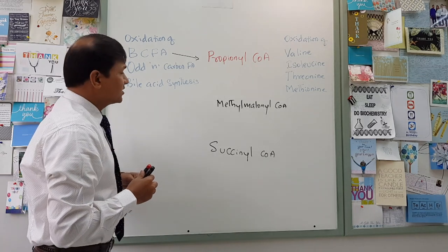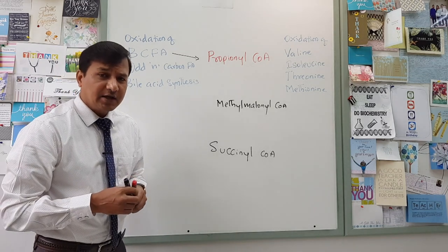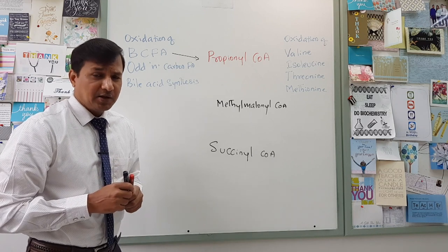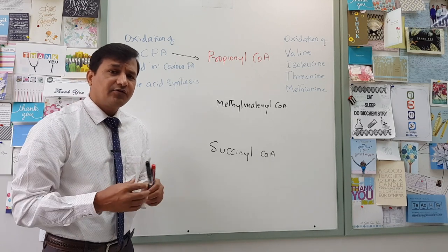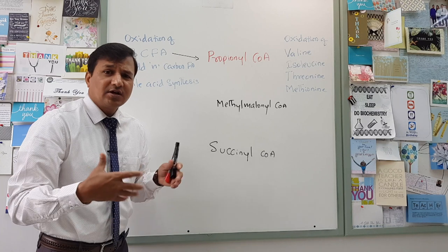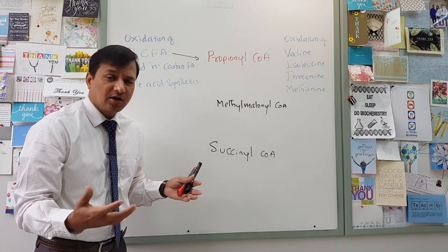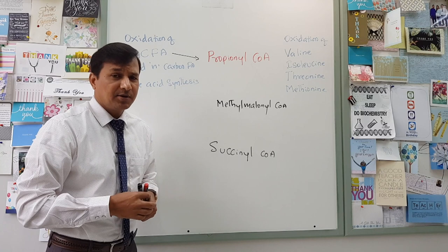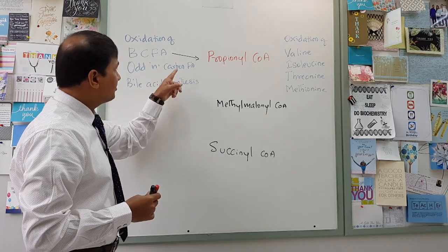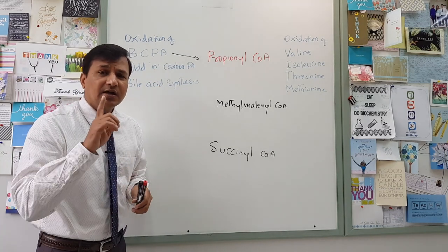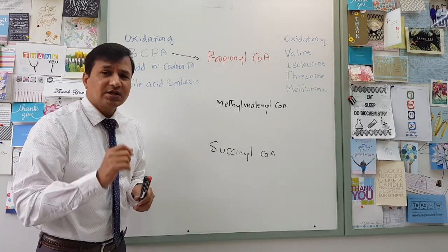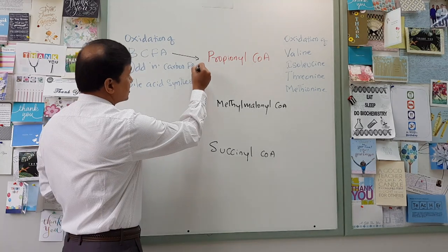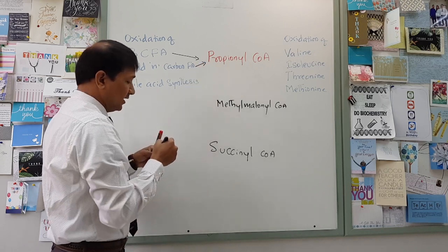Oxidation of odd-number carbon fatty acids will also give Propionyl-CoA. In the oxidation of odd-number carbon fatty acids, it is regular beta-oxidation going on, but at the end — in the last spiral of beta-oxidation — it will give one Acetyl-CoA and one Propionyl-CoA. So that is another source of Propionyl-CoA in our body.